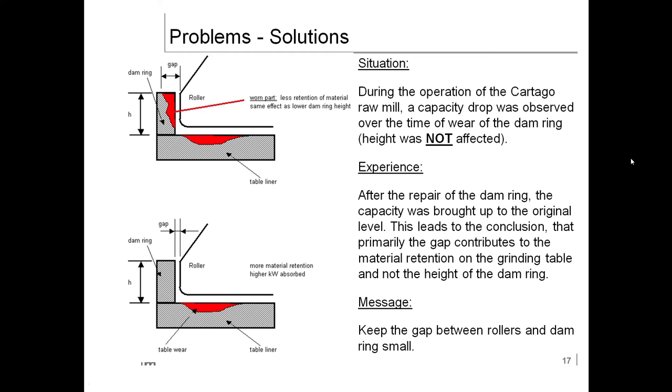Dam ring gap case: during operation of the raw mill, capacity drop was observed over time of wear. The dam ring height was not affected. Experience: after repair of the dam ring, capacity was brought up to original level. This leads to the conclusion that primarily the gap contributes to material retention on the grinding table and not the height of the dam ring. Message: keep the gap between rollers and dam ring small.